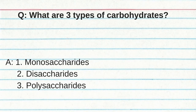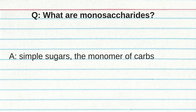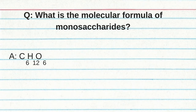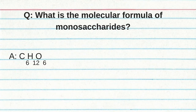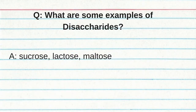What are three types of carbohydrates? One, monosaccharides. Two, disaccharides. Three, polysaccharides. What are monosaccharides? Simple sugars and the monomer of carbs. The molecular formula of monosaccharides is C6H12O6. Examples of monosaccharides include glucose and fructose. Examples of disaccharides include sucrose, lactose, and maltose.